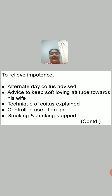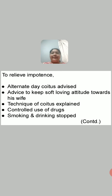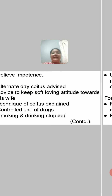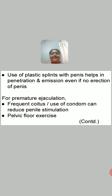The technique of coitus should be explained if it is found to be improper. Controlled use of drugs is important — the person may be using hypotensives, tranquilizers, hypnotics, or steroids for some disorder, and these should be used in a controlled manner. Smoking and drinking should be stopped. Use of plastic splints with the penis helps in penetration and emission even if no erection occurs.